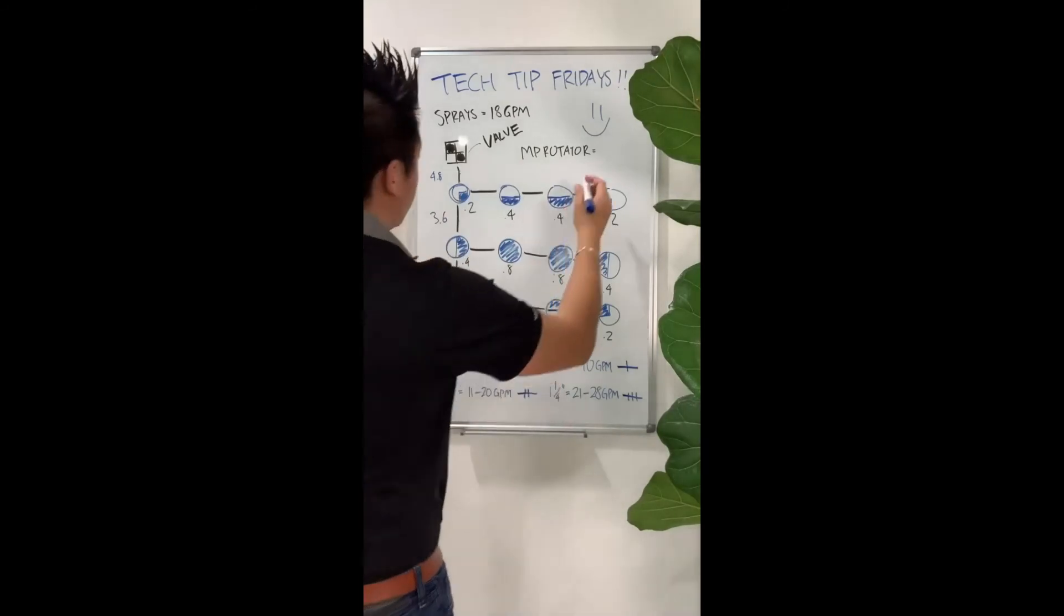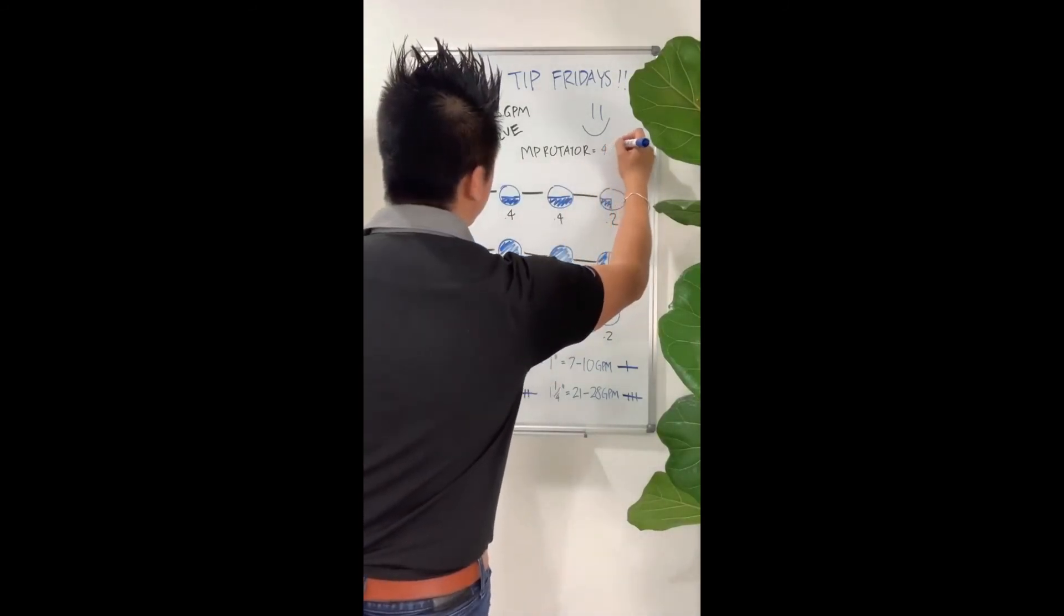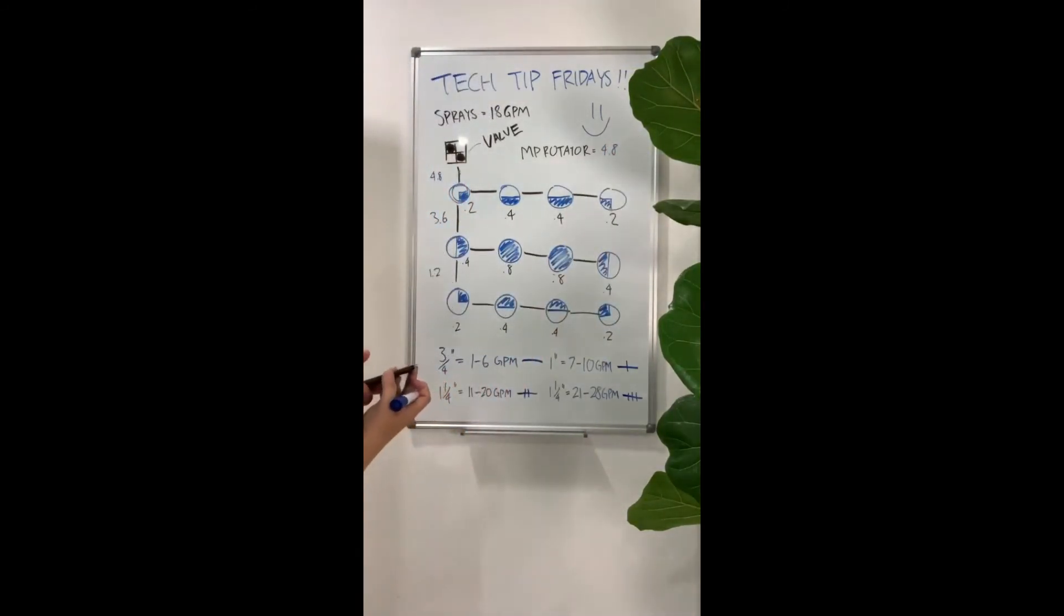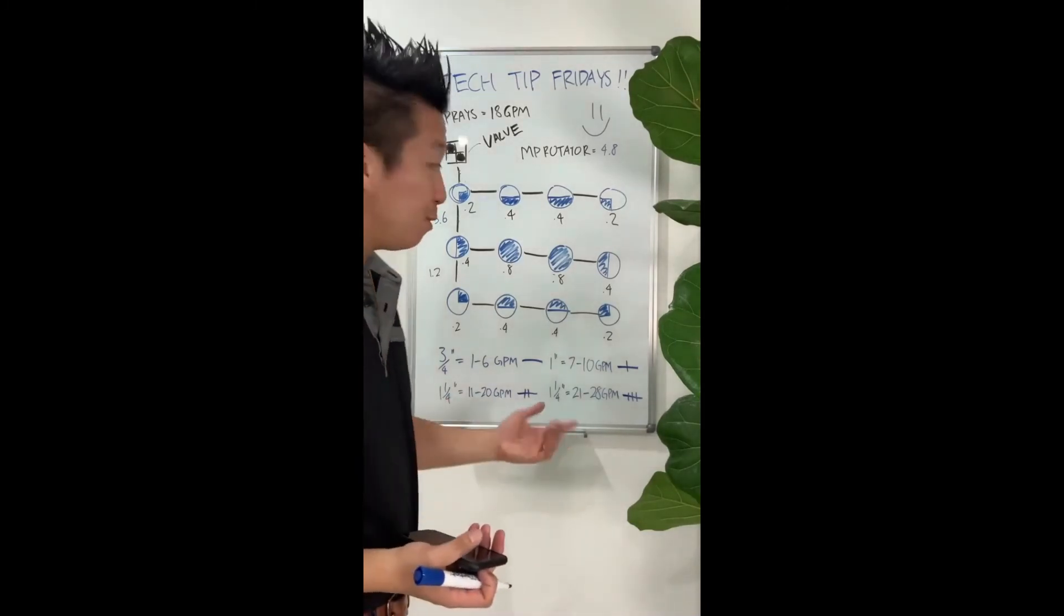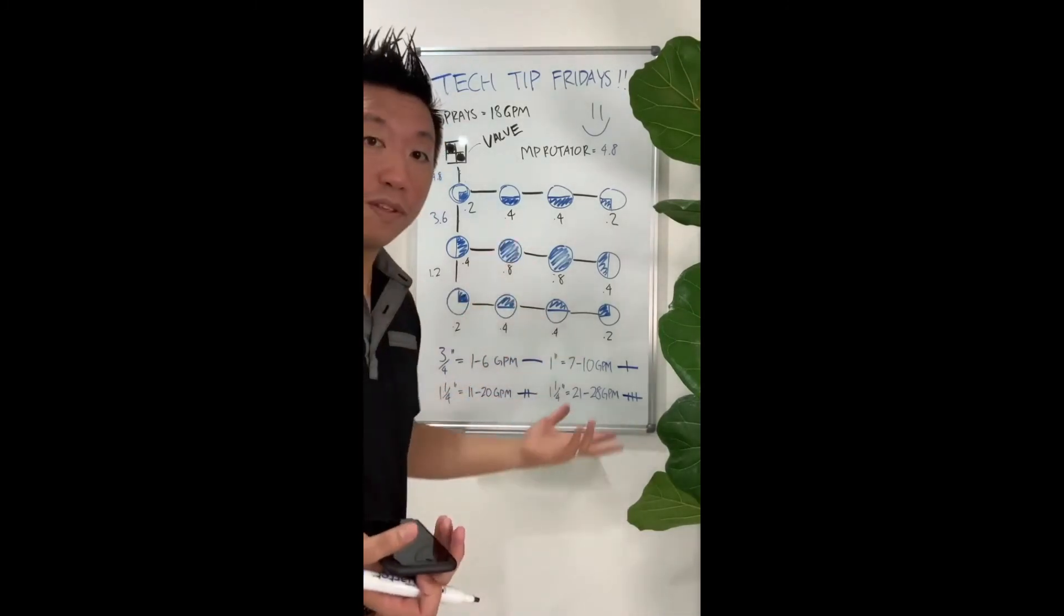Now with MP rotators, we have reduced the flow to about 4.8. And when you're looking at what size pipe you're going to use, 4.8 actually lands between 1 to 6 GPMs, which gives you a 3 quarter inch pipe. So if you're doing MP rotators, you can actually do 3 quarter inch pipe for the entire zone.